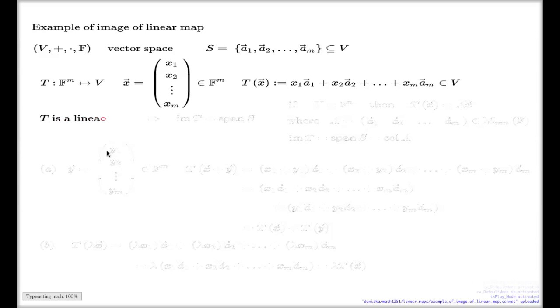I claim that T is a linear map. And that's a very important linear map, in fact. Why this is so? I have to test my two properties of the linear map. And here's my test. Property a, the one we discussed with you on Tuesday.